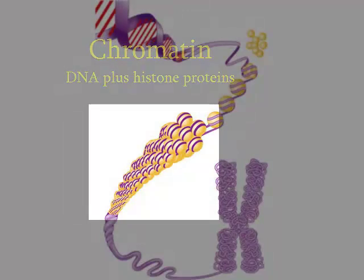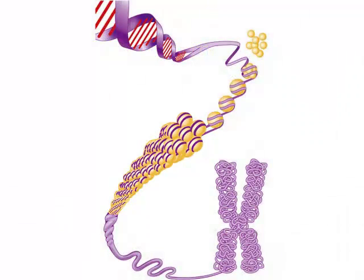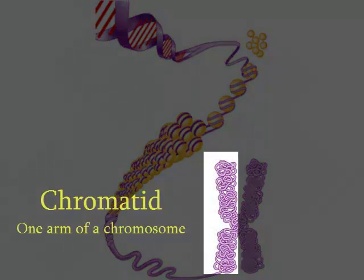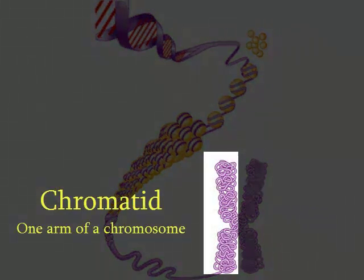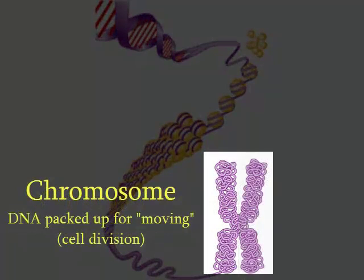Chromatin fiber is packed into larger structures, packed even further. By the time we get it completely packed, one continuous DNA molecule has formed a chromatid, which is one arm of a chromosome.